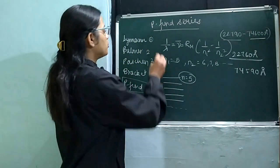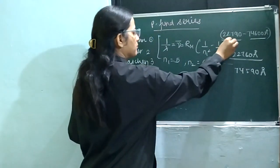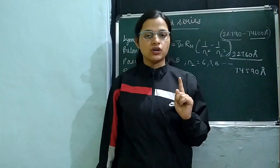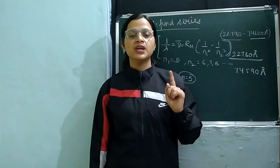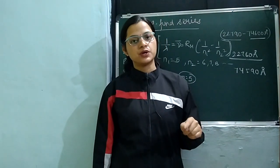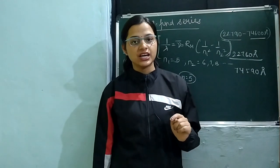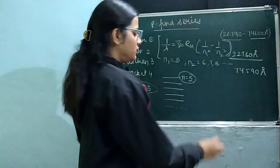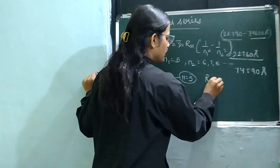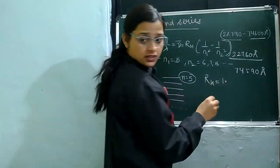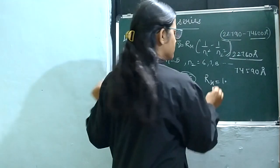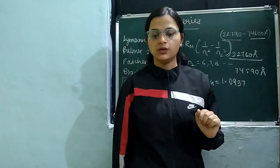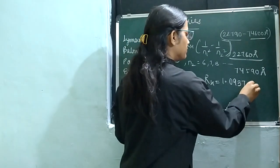If there are transitions, you have to use the formula: 1 by lambda equals nu-bar, which is also called the wave number, equivalent to RH in bracket 1 by N1 squared minus 1 by N2 squared. RH is the Rydberg constant, and the Rydberg constant value is 1.0937 × 10⁷.